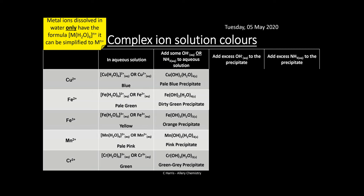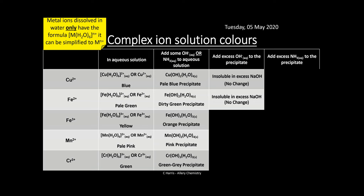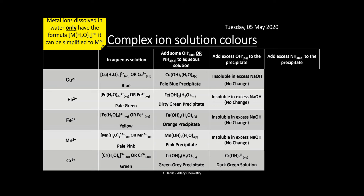Adding excess hydroxide to the precipitate: copper is insoluble in excess NaOH - no change. Fe²⁺ is insoluble - no change. Fe³⁺ is insoluble - no change. Mn²⁺ is insoluble - no change. However, chromium³⁺ is the only one that changes - all water ligands disappear and you get [Cr(OH)₆]³⁻, with six hydroxide ligands. This now carries a 3- charge (six OHs around a +3 chromium), so it goes back into solution as a dark green solution. Neutral complexes precipitate; charged complexes form solutions.